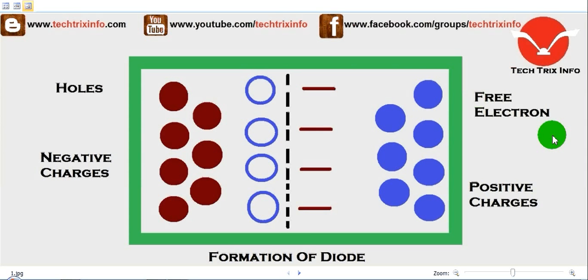A diode is a device which allows electric current to flow through in one direction only and not in the opposite direction. It lets the electric current pass through only in one direction.